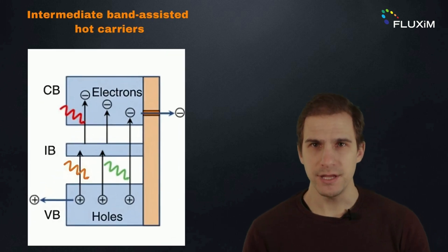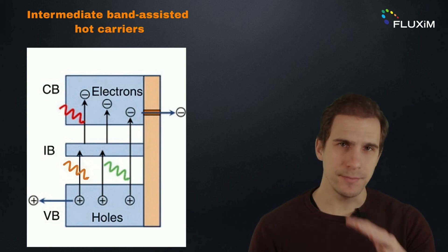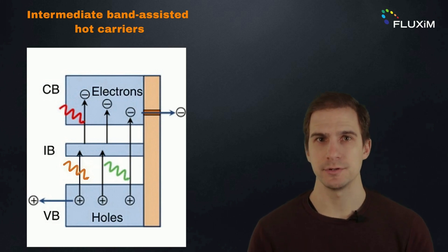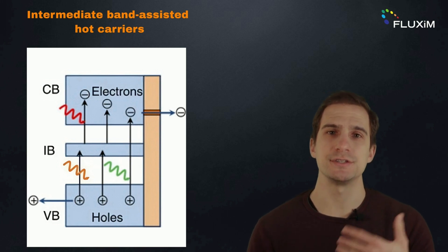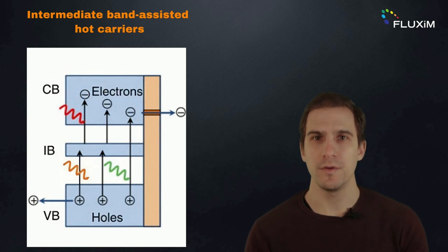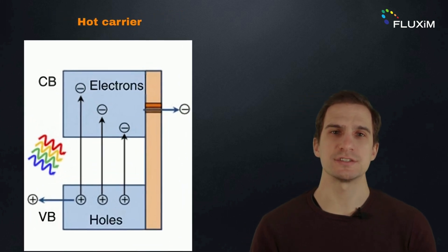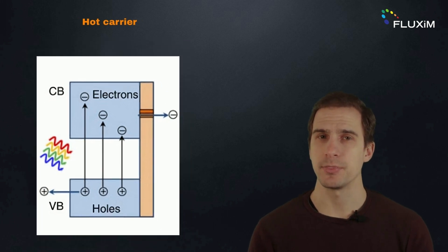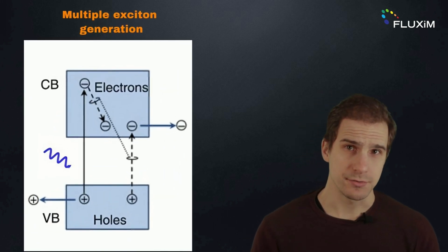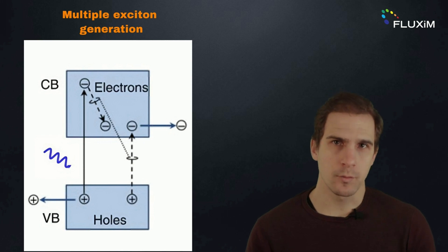There are different technological solutions to improve solar cell efficiency beyond the limit of single junction cells. Intermediate band solar cells add an energy level intermediate to the material band gap to absorb photons at energies smaller than the band gap without reducing the voltage. Hot carrier solar cells extract high energy charge carriers before the excess energy turns into heat. Multiple exciton generation solar cells create more than one charge carrier from a single high energy photon.